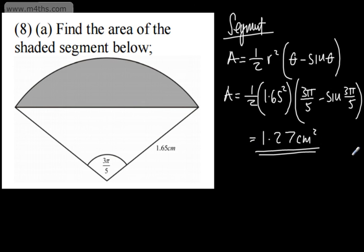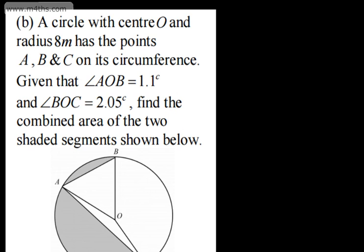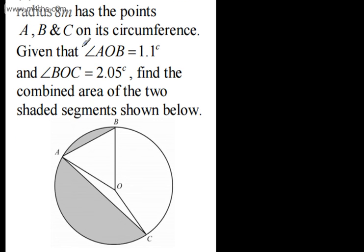That is the shaded area. You could work out the area of the sector minus the area of the triangle — this is just an easier way of writing it. Let's have a go at a more challenging question. Part B: a circle with center O and radius 8 meters has points A, B, and C on its circumference. Given that angle AOB is 1.1 radians and angle BOC is 2.05 radians, find the combined area of the two shaded segments.